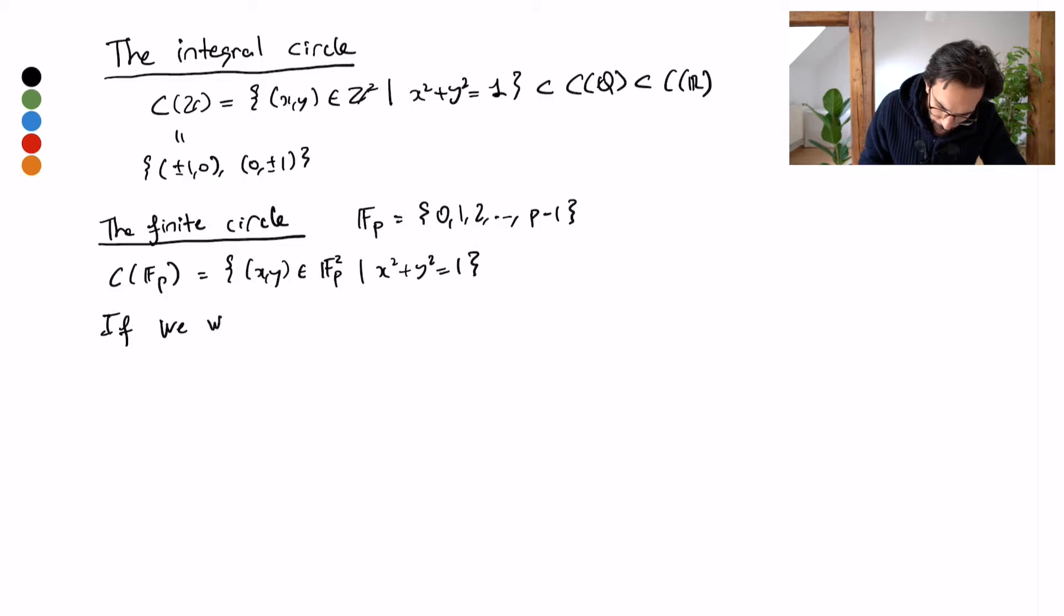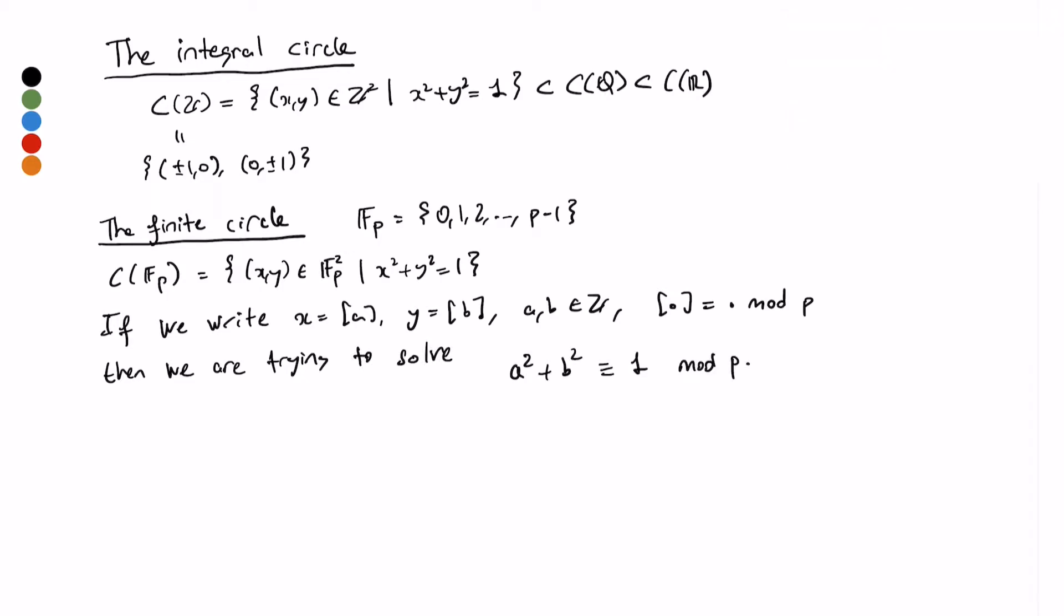If I write the point in F_p as the residue class of an integer, where a, b are integers, let's say, and square brackets denotes residue mod p, then I want to find a squared plus b squared equal to one mod p.